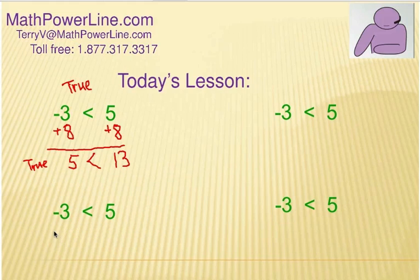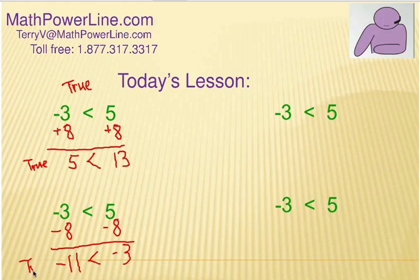Let's subtract something. Let's subtract 8 from each side here and see what happens there. We still start with a true statement. Negative 3 is less than 5. Now, if we subtract equal numbers on each side, that'll be negative 11 and negative 3. Is negative 11 less than negative 3? Think about the number line. Yes. It's further on the left. So, it's okay to add or subtract equal things. Keep the inequality symbol the same.